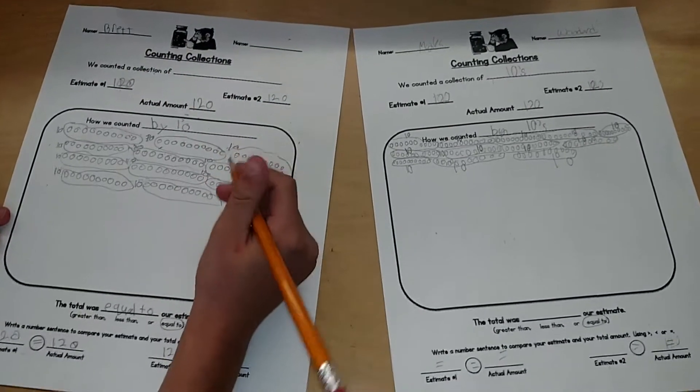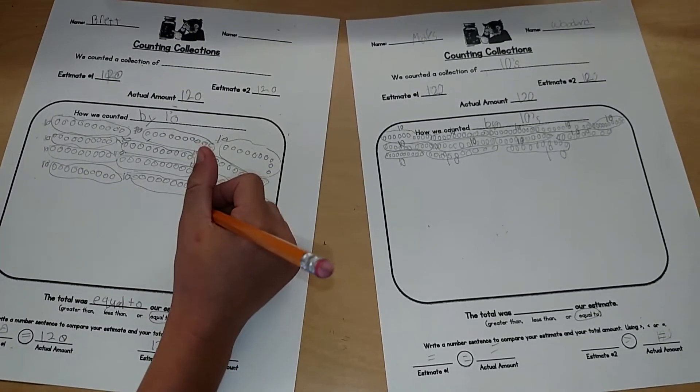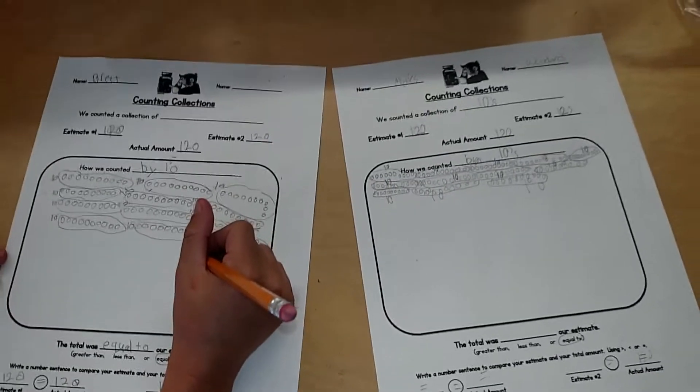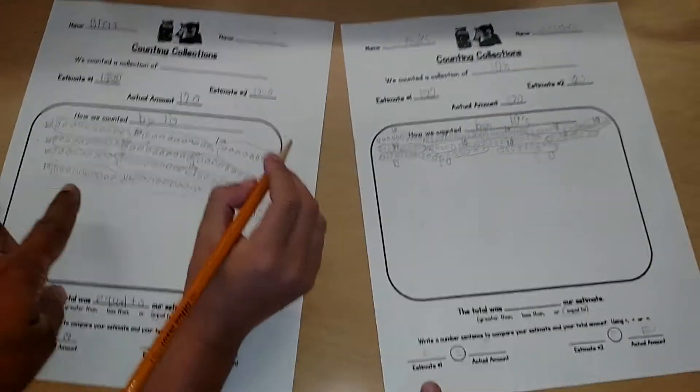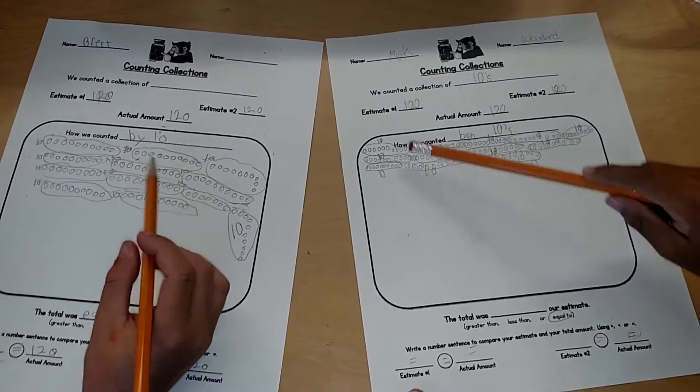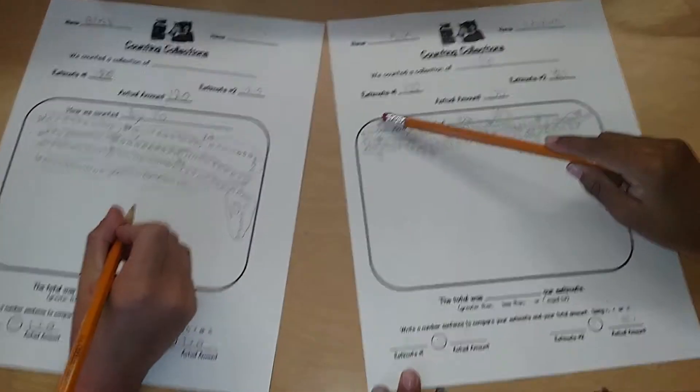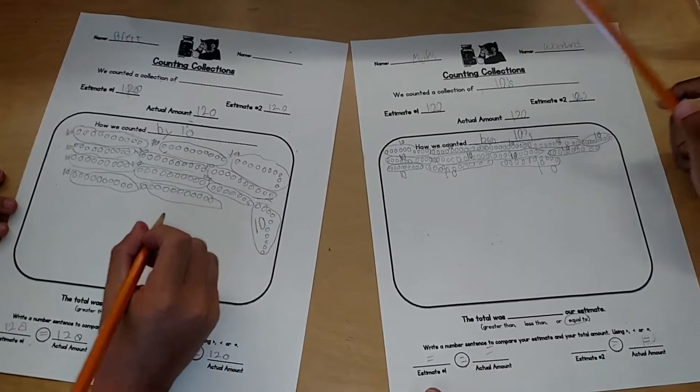So how many groups do you have? 120. That's how many you have all together. How many groups? How many circles did you make? Look at your paper. The big groups? 12. 12 groups. Do you agree? Count again. Make sure it's 12 groups.